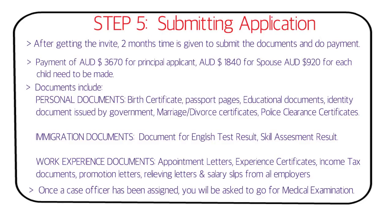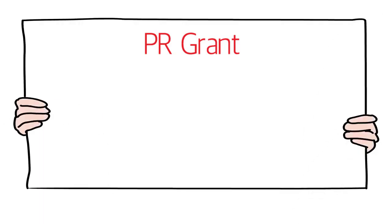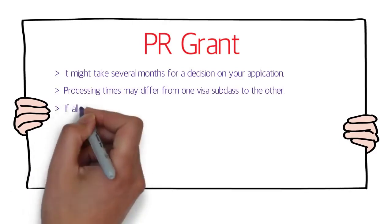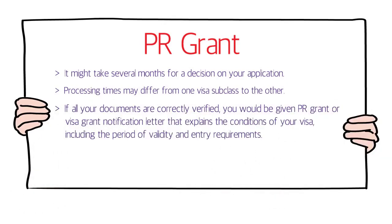After submitting the application, it may take several months for a decision, generally varying from one visa subclass to another — roughly four to seven months. If all documents are correctly verified, you will be given a PR grant or visa grant notification letter explaining the conditions of your visa, including the period of validity and entry requirements.